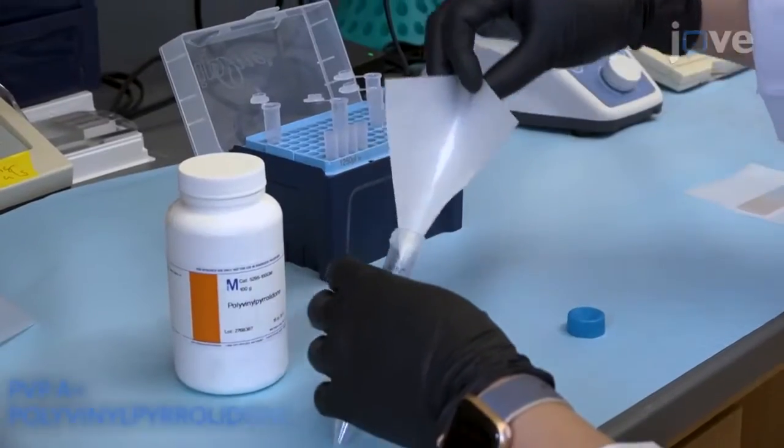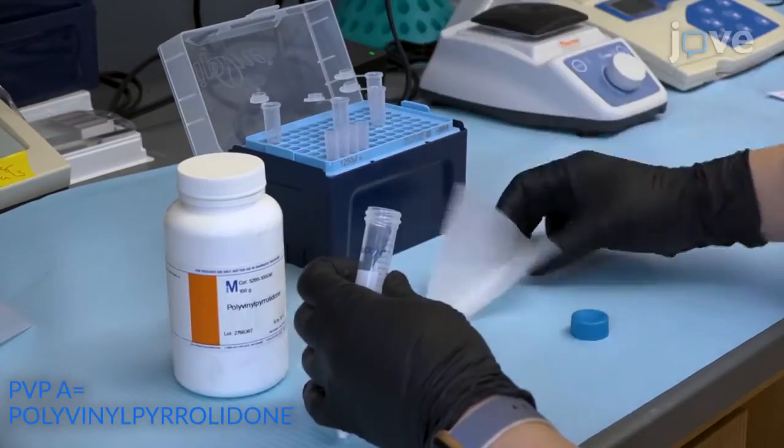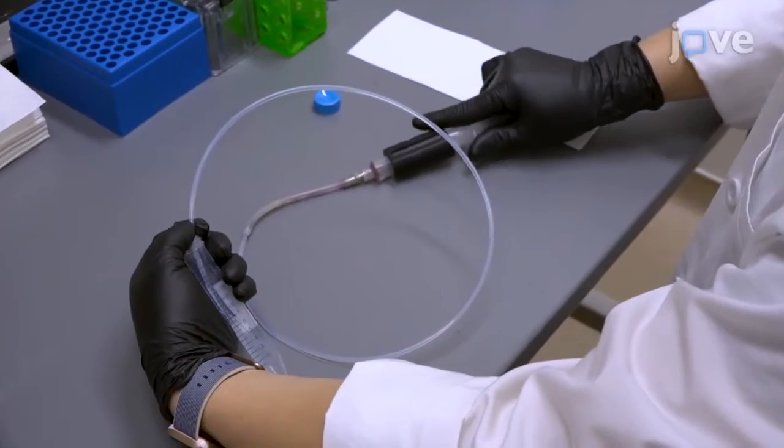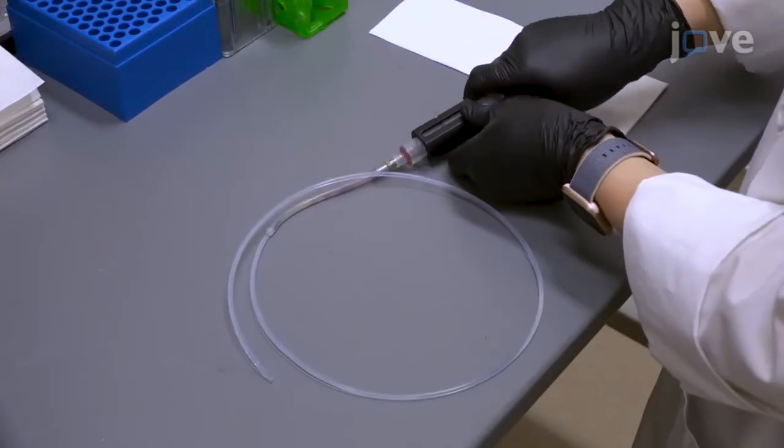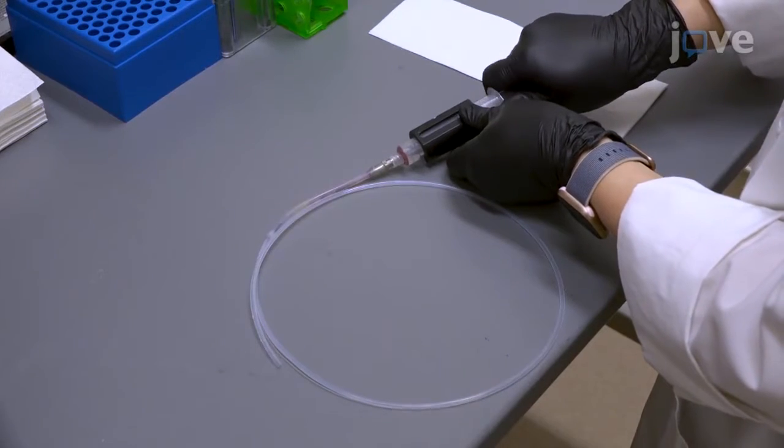Begin by preparing PVP solution according to manuscript directions. Fill the tubing with PVP and leave it for 20 minutes, and expel it through the other end with a 10 milliliter syringe.